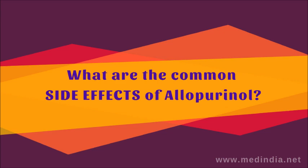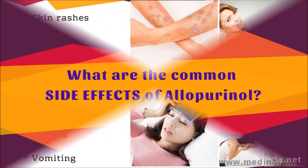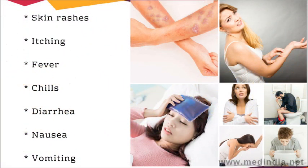What are the common side effects of allopurinol? Common side effects include skin rashes, itching, fever, chills, diarrhea, nausea, and vomiting.